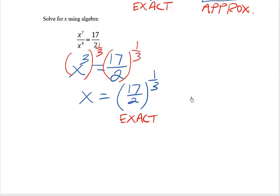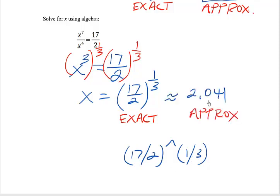If we wanted a decimal approximation, we would just go to the calculator. And remember, when you type it in, that 17 halves needs to be in a parentheses. And depending on the type of calculator you have, that one-third may also need to be in parentheses if the calculator doesn't give you the nice little exponent box. Go ahead and do that. See what you get. I got about 2.041 rounded off to three places as the final approximate solution to this equation. Make sure that you practice this skill because we will need to use it in the next lesson.